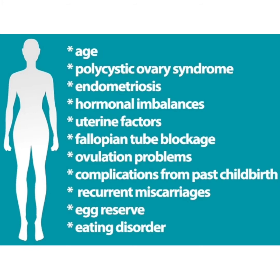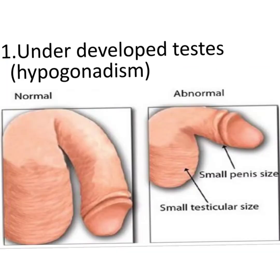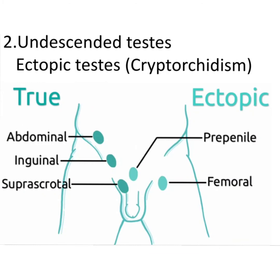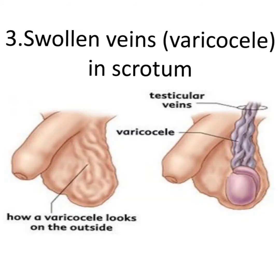What are the male causes of infertility? Underdeveloped testis or penis, called hypogonadism, results in decreased secretion or formation of sperm or decreased sexual performance. Undescended testis or ectopic testis is called cryptorchidism; the undescended testis may be in the abdomen, inguinal region, or inguinal canal, or suprascrotal. Swollen veins present in the scrotum are called varicocele.